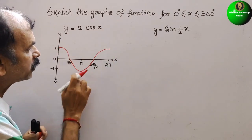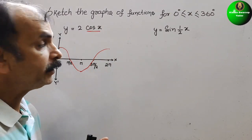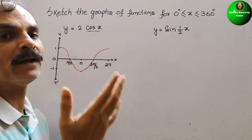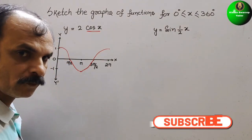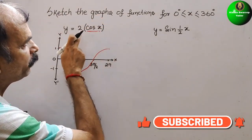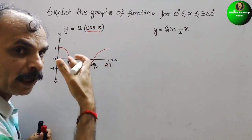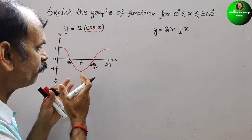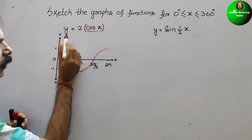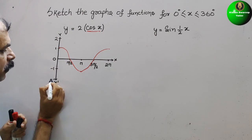So this is the original cos graph that we have drawn. Now here they have given 2, that means we have to amplify it 2 times. You can write this as a bracket: cos x into 2. That means 2 times it will get increased. So instead of 1 it will be 2, and instead of minus 1 it will be minus 2.